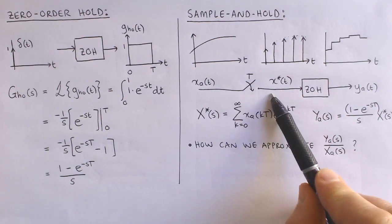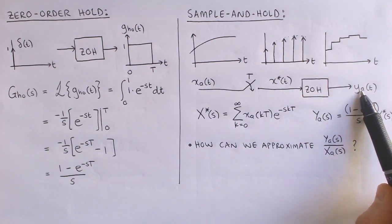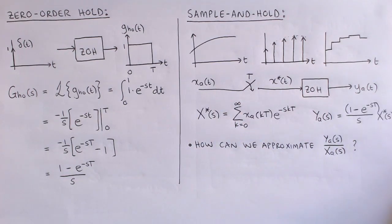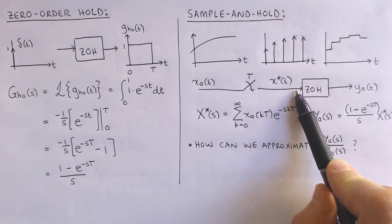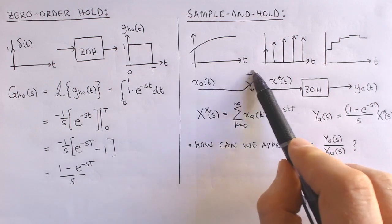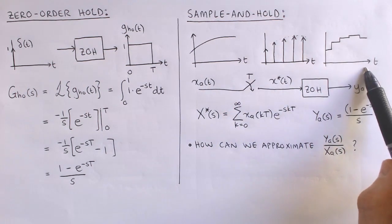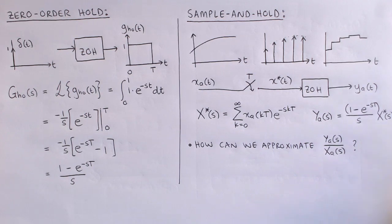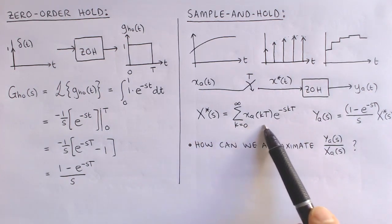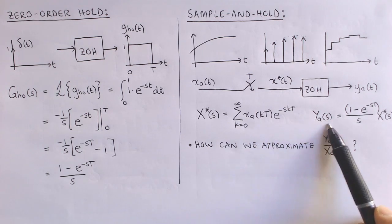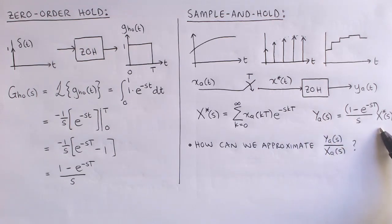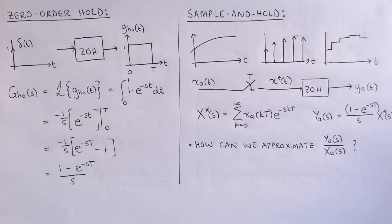Let's now combine the sampler and zero-order hold circuit to form the so-called sample and hold circuit. This is equivalent to having a unity gain controller in our digital control system. An analog input signal is sampled and then put through a zero-order hold circuit. The Laplace domain model of the sampler is given by the infinite sum we derived on the previous page, and the Laplace domain model of the zero-order hold circuit is given by this transfer function. Since sampling is not linear and time-invariant, we cannot find an exact transfer function to model the sample and hold circuit, and we therefore have to find a good approximation.